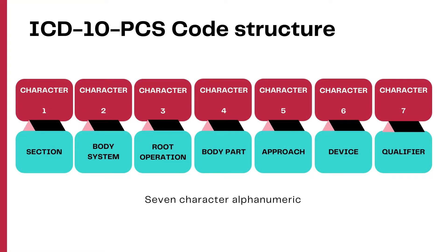As we all know, these are the seven characters in the ICD-10-PCS: section, body system, root operation, body part, approach, device, and qualifier.